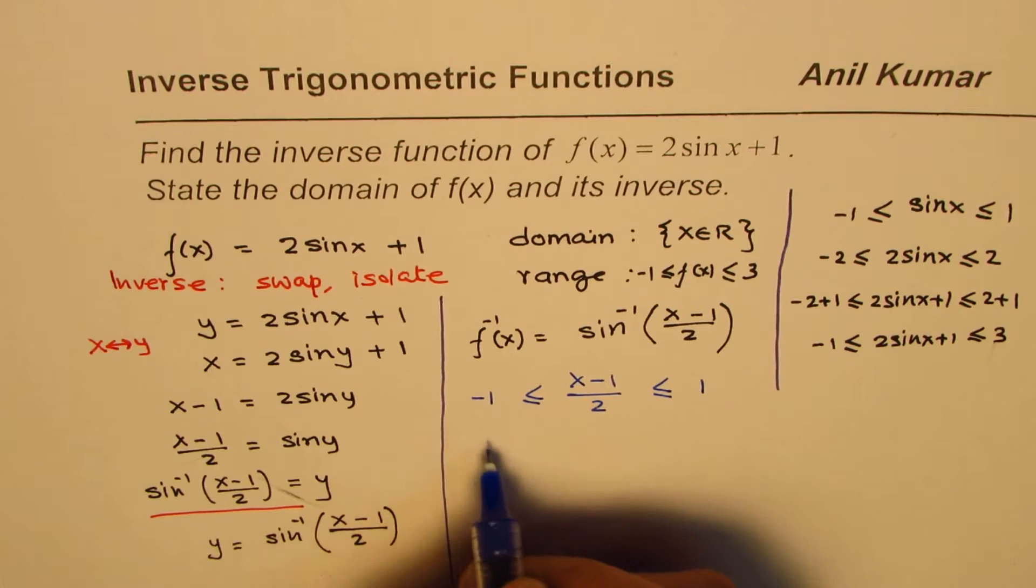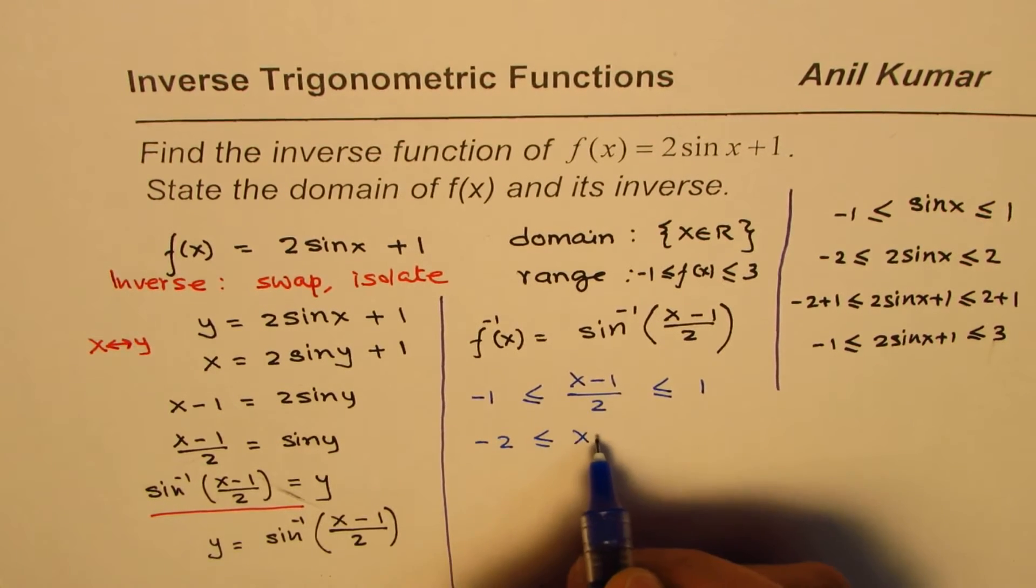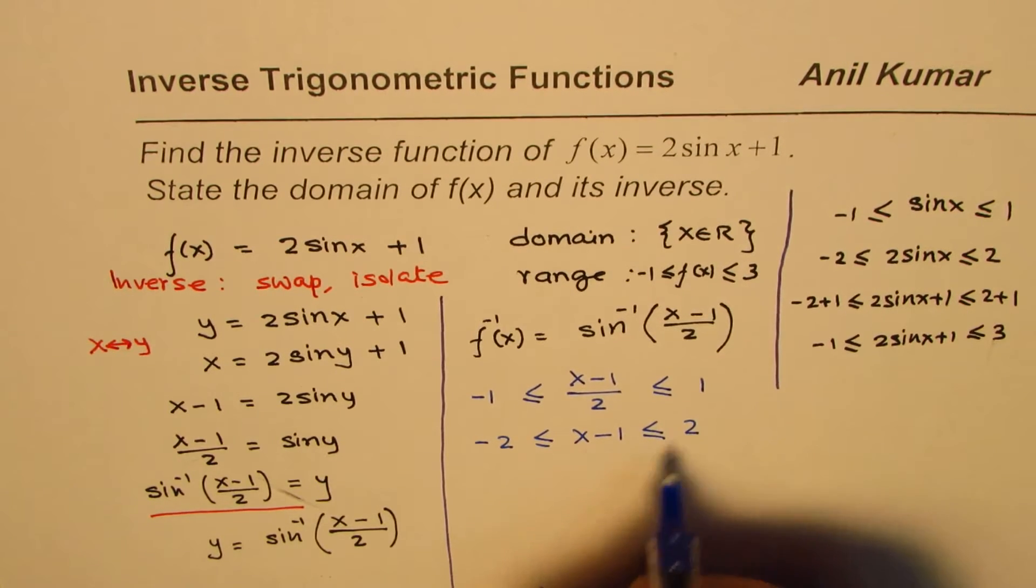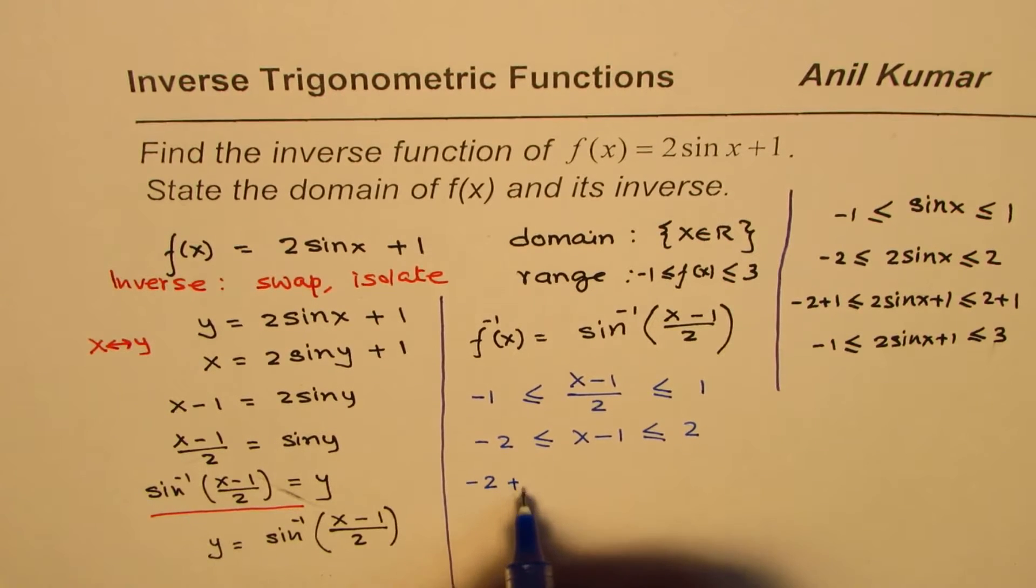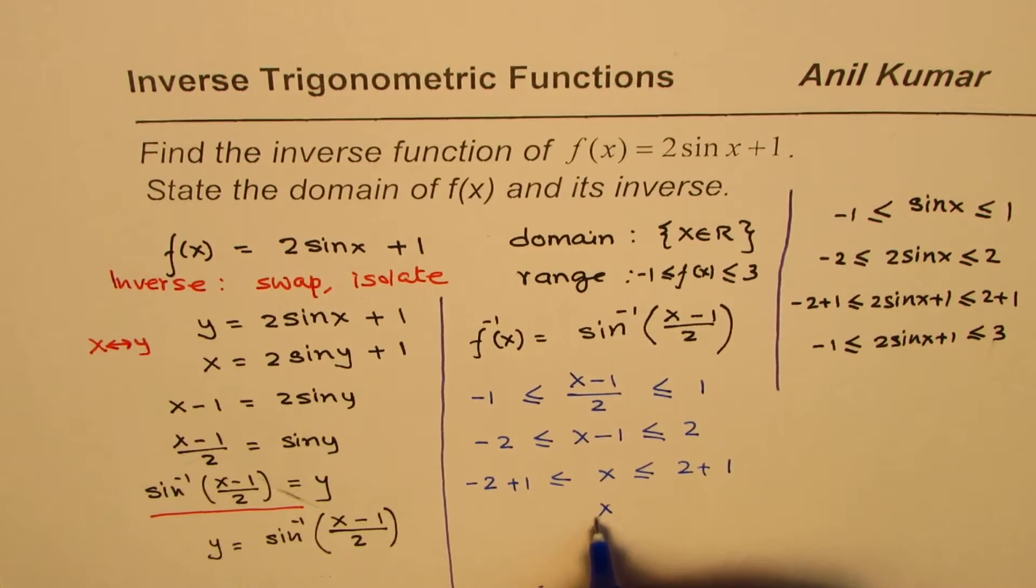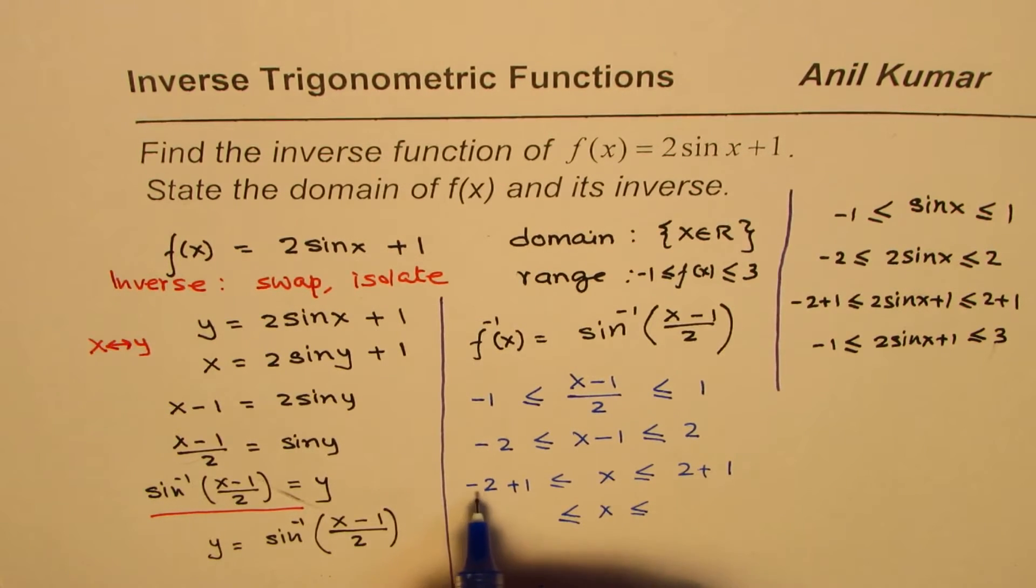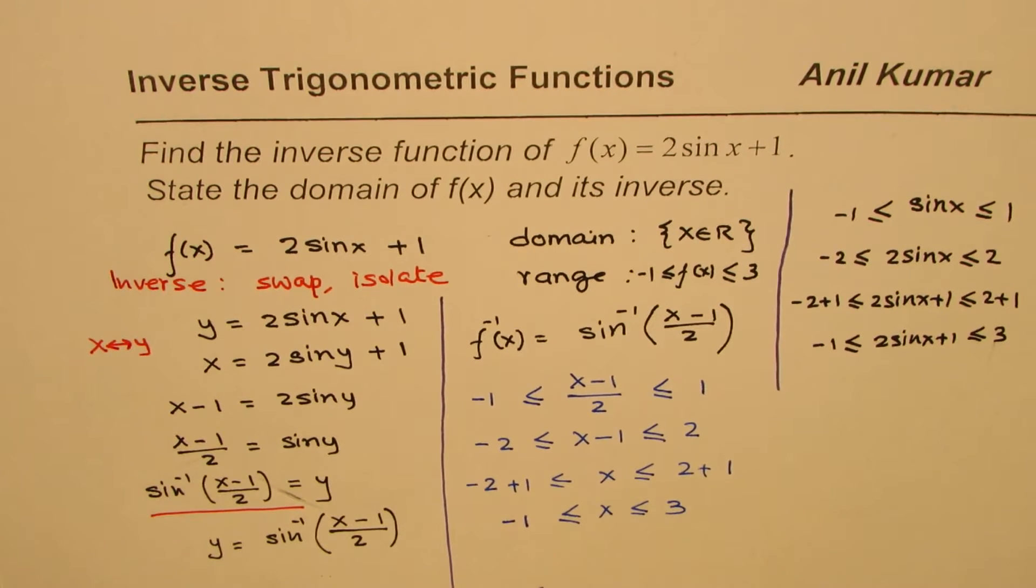So, we can now multiply by 2. So, we get x - 1 is between ±2. Now, we can add 1. So, when you add 1, you get -2 + 1 ≤ x ≤ 2 + 1. Or, you can say that it is between -1 and 3.